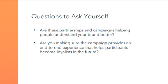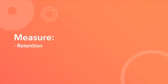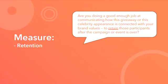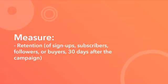That's the kind of messaging that's going to connect emotionally with your audience and get them to the next level. To measure self-regulated interest, it's all about retention. If you're giving away a car at an event or bringing in a celebrity, the real question you should be asking yourself is: are you doing a good enough job communicating how this giveaway or celebrity appearance is connected with your brand values to retain those participants after the campaign or event is over? Measure this by looking at the retention rates from that campaign or event — whether it's signups, subscribers, followers, or buyers. Once these people take an action, do they stick with you? Or do you notice a drop-off within, say, 30 days of the close of the campaign or event?